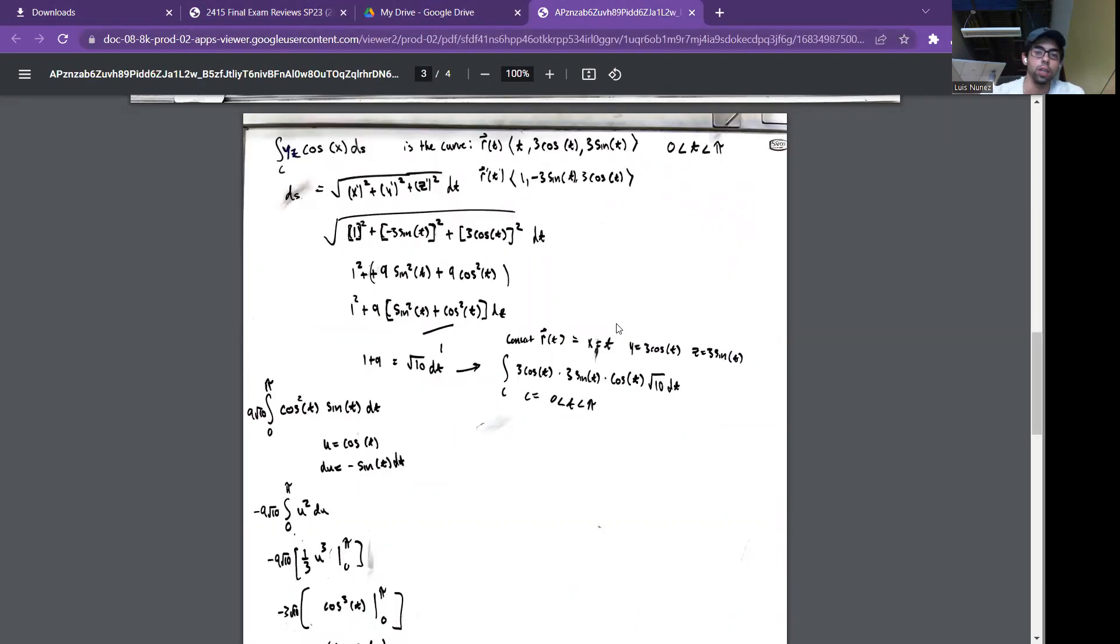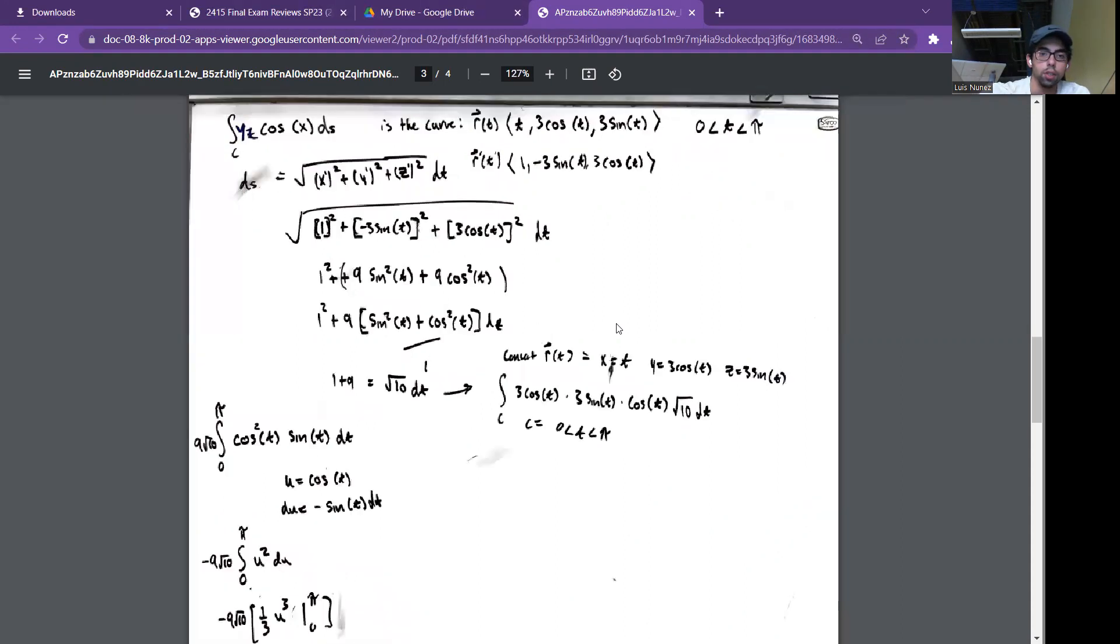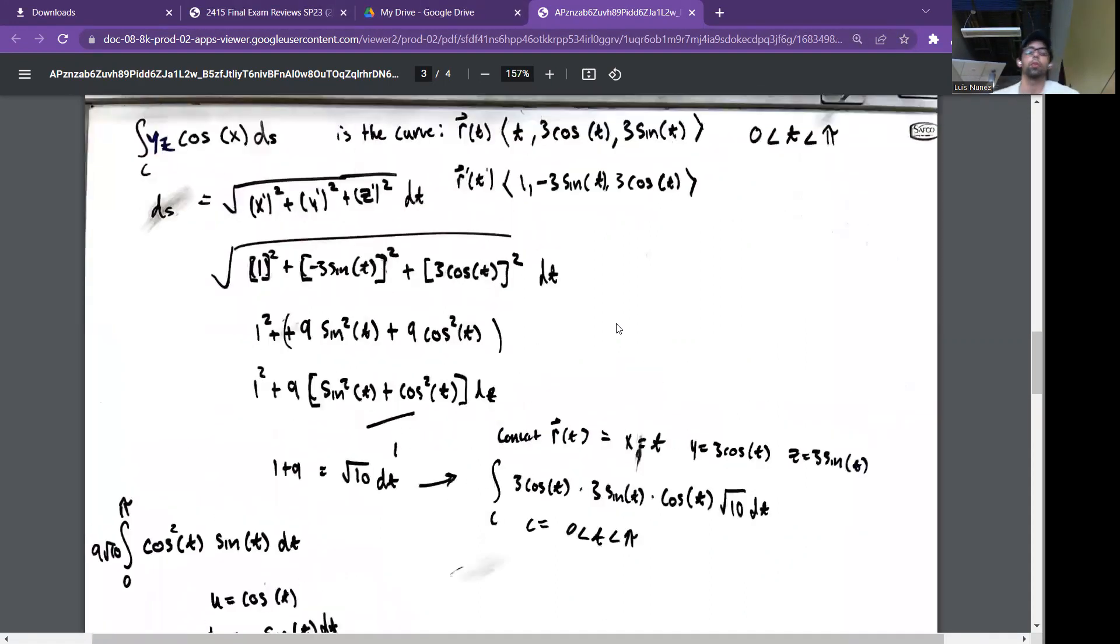So the first thing I did was find the ds, which is the square root of X prime squared plus Y prime squared plus Z prime squared. I ended up putting over here to the right the derivatives. They are the derivatives, those are the primes, and I ended up inputting them inside the square root.